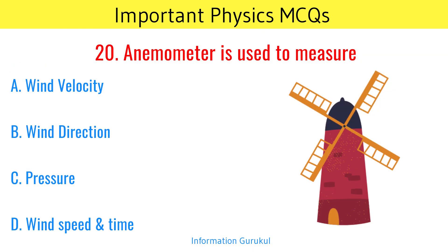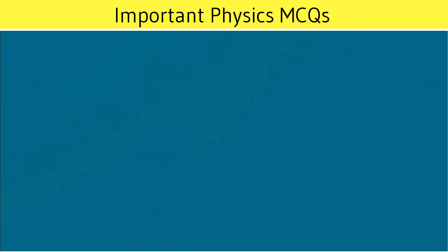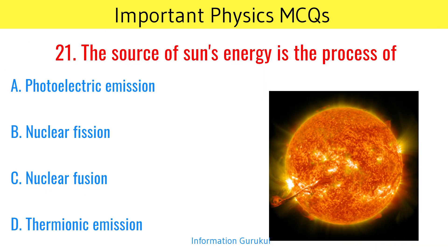Anemometer is used to measure? Wind velocity. The source of the sun's energy is the process of? Nuclear fusion.